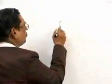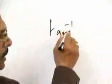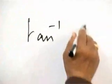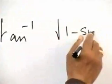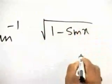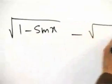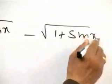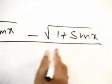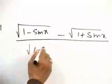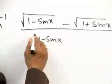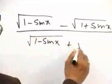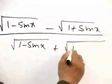Therefore, we are asked to find this value: tan inverse of square root of 1 minus sin x minus square root of 1 plus sin x, the whole thing divided by square root of 1 minus sin x plus square root of 1 plus sin x.